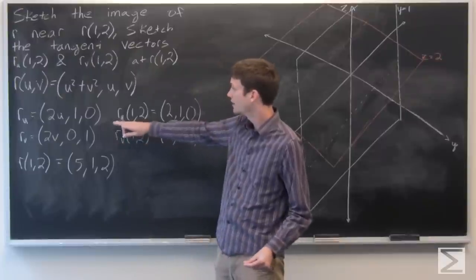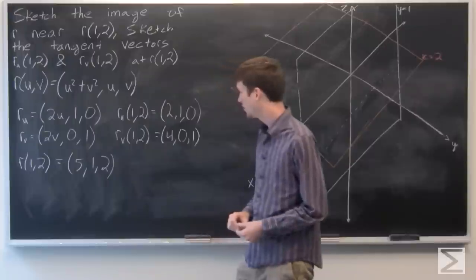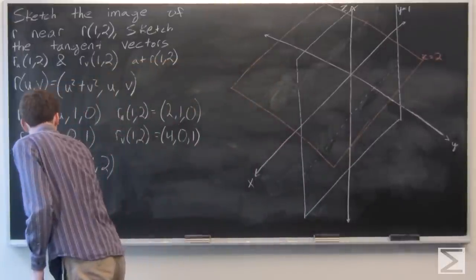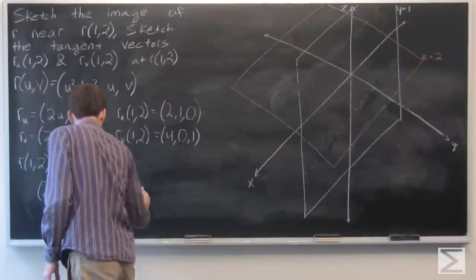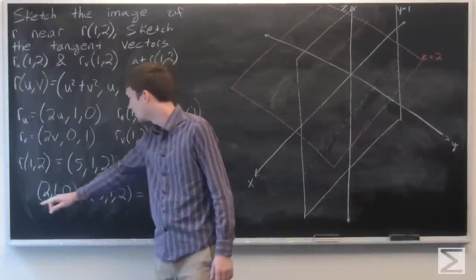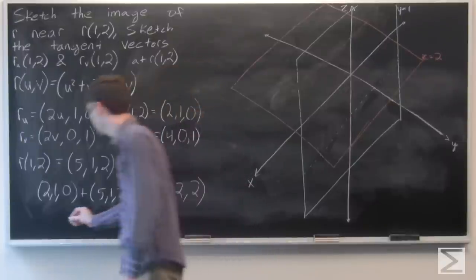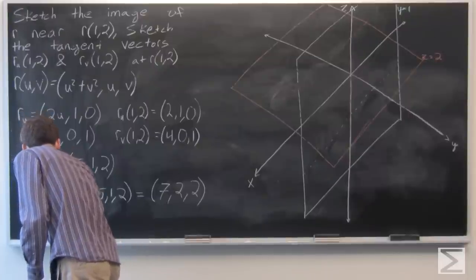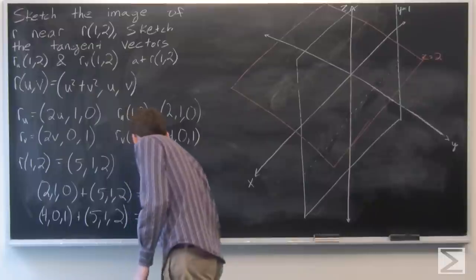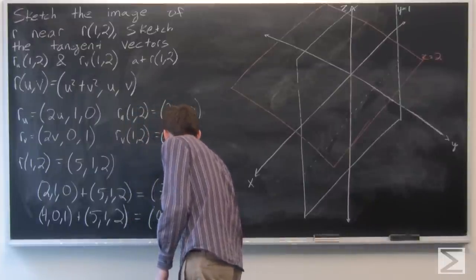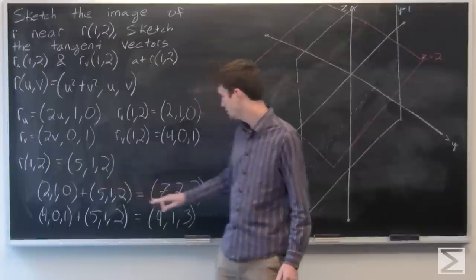Now we want to translate these r_u and r_v at the point (1,2) to the point (5,1,2) to be based at that point. So we get (7,2,2) is our first vector and (9,1,3) is our second point.